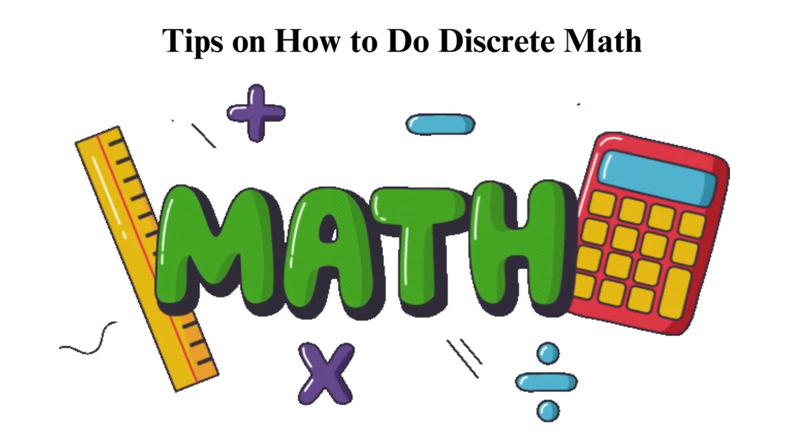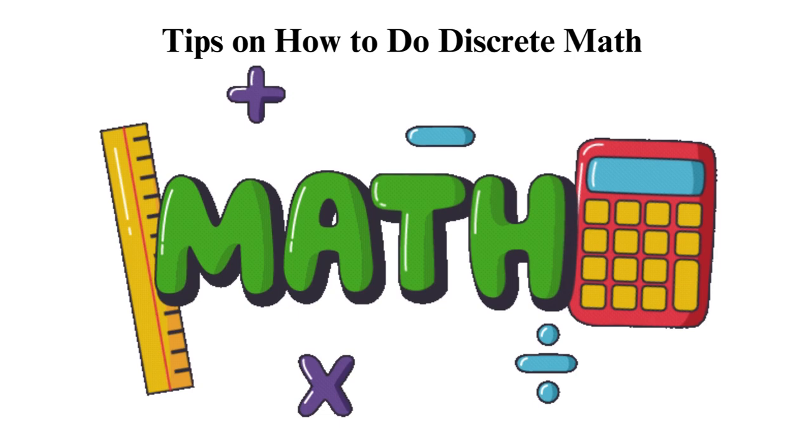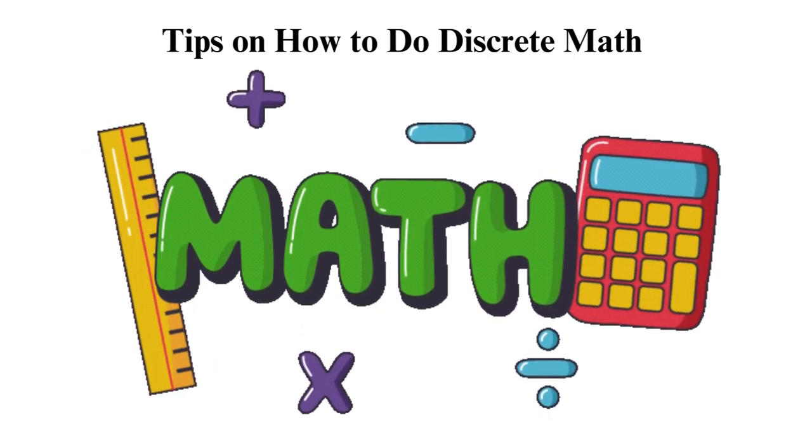Discrete math deals with content such as set theory, graph theory, logic permutation, etc. This subject falls under the second category of math, and we have another one called continuous.